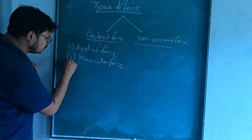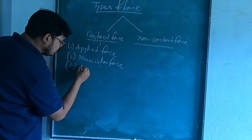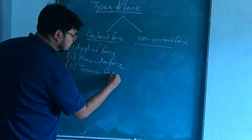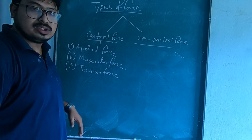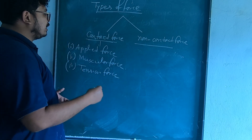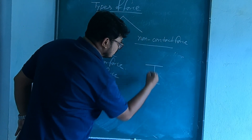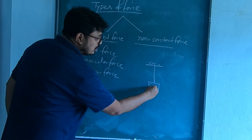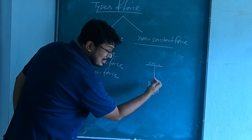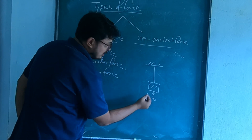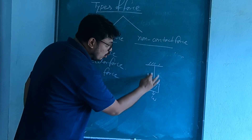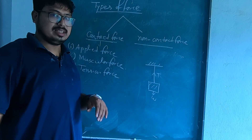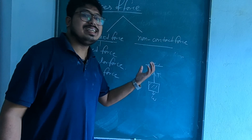Next, we have tension force. What is tension force? When an object is hung by a rope or thread, the weight of the object acts in the downward direction. On the thread or rope, there will be a force opposing that direction, and that force is called tension force.